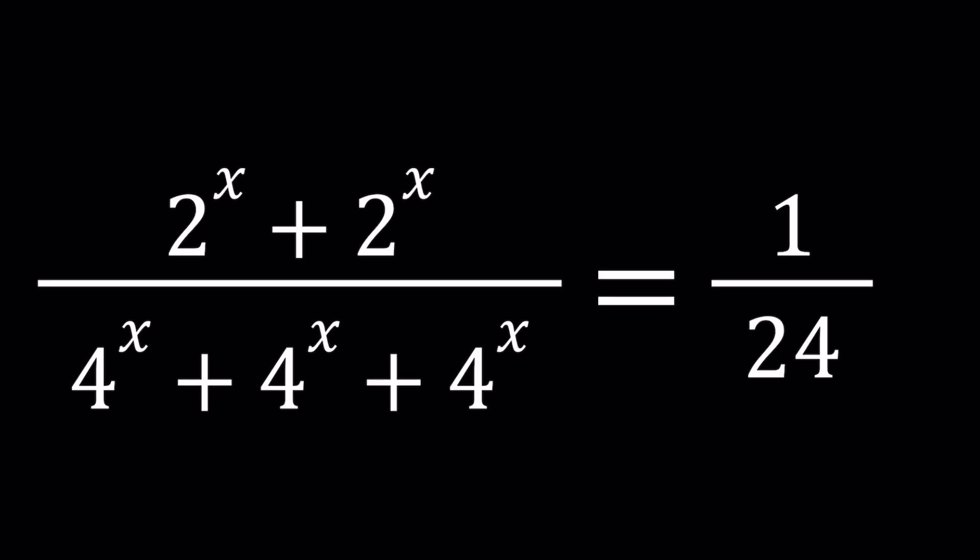Hello everyone, in this video we're going to be solving an exponential equation. We have 2^x + 2^x in the numerator and the denominator is made up of 4^x, but we have that 3 times. And the whole thing equals 1/24.